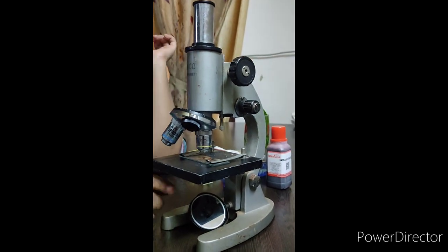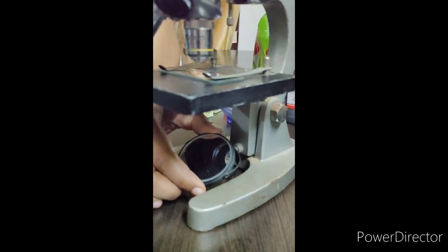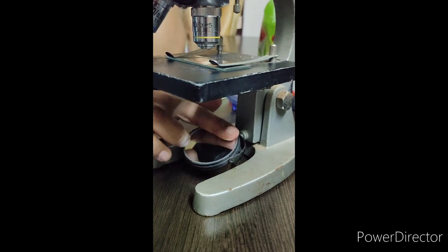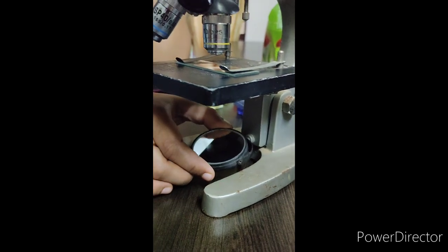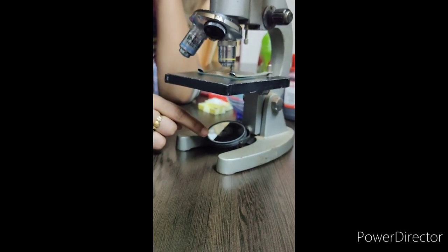And the light for the microscope is provided with a mirror here. See, you can see the mirror here. This mirror will reflect the sunlight towards the microscope. This is how you will get light for the microscope.